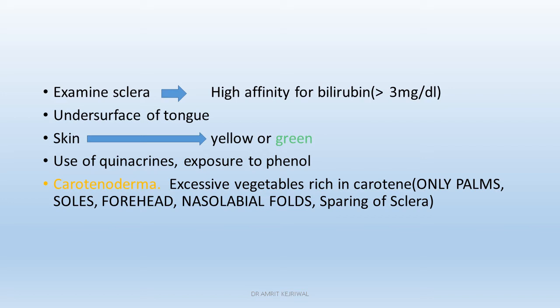Carotenodermia is caused by excessive consumption of vegetables rich in carotene. When a person consumes a lot of these vegetables, there may be yellowish discoloration, but only the palms, soles, forehead, and nasolabial folds are affected — with total sparing of the sclera. That is how we can distinguish carotenodermia from jaundice clinically. Also, the color of the urine is changed with hyperbilirubinemia.